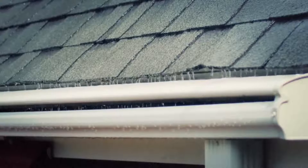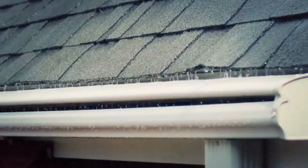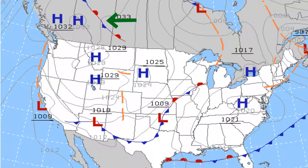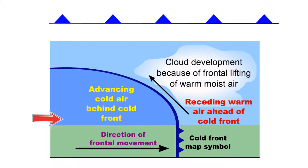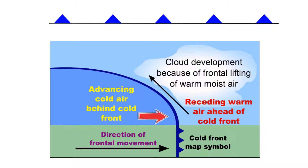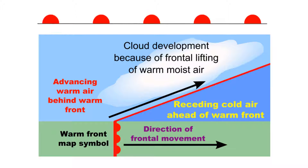Next you have symbols for fronts. There are four main types of fronts. A cold front is represented with a triangle, and the triangles point in the direction of movement. A warm front is represented by a circle.